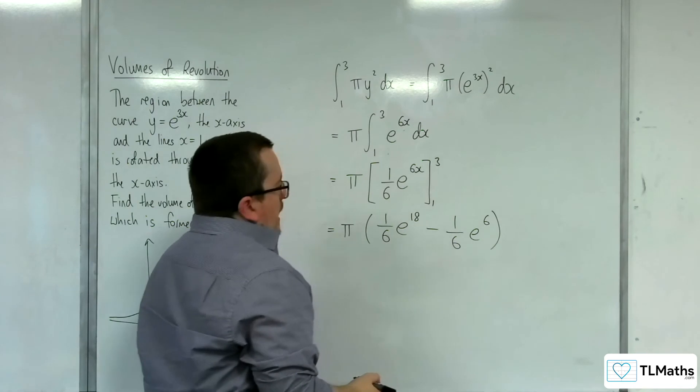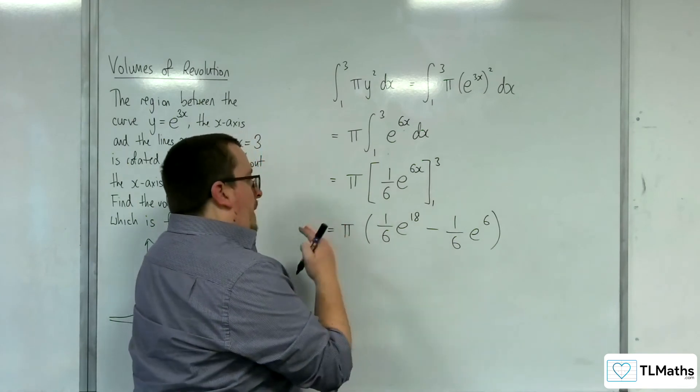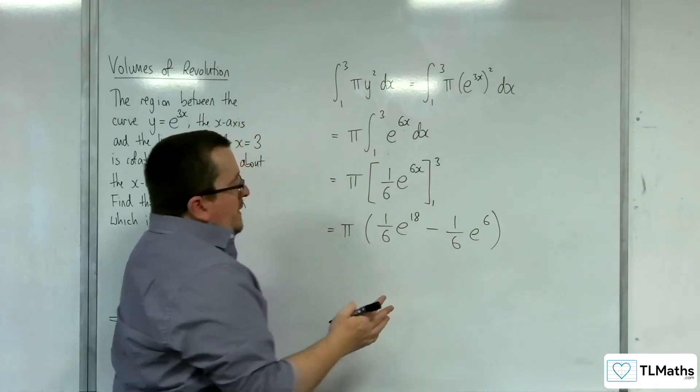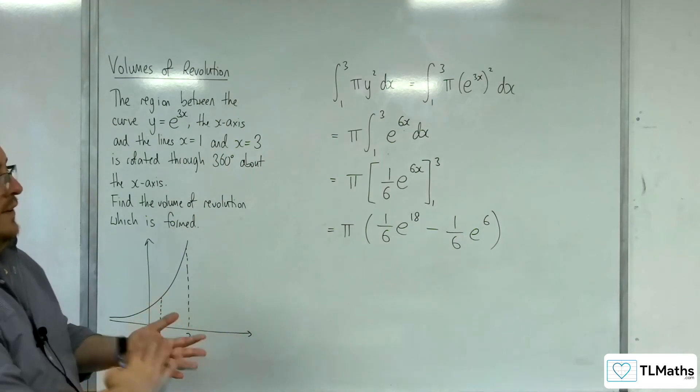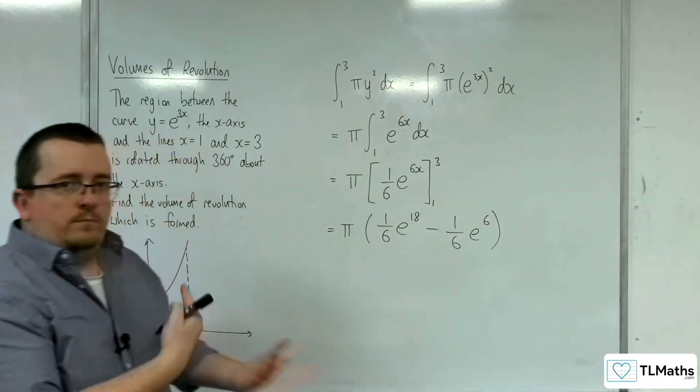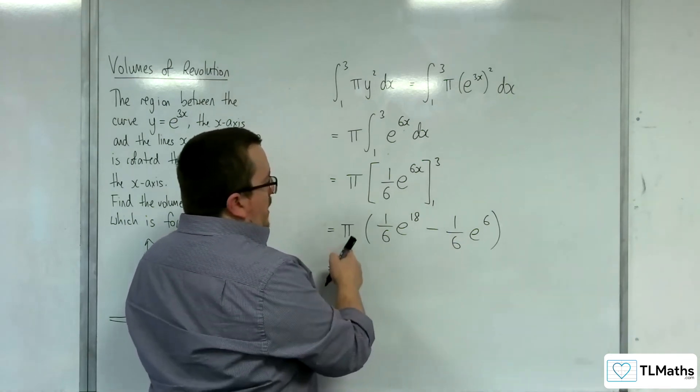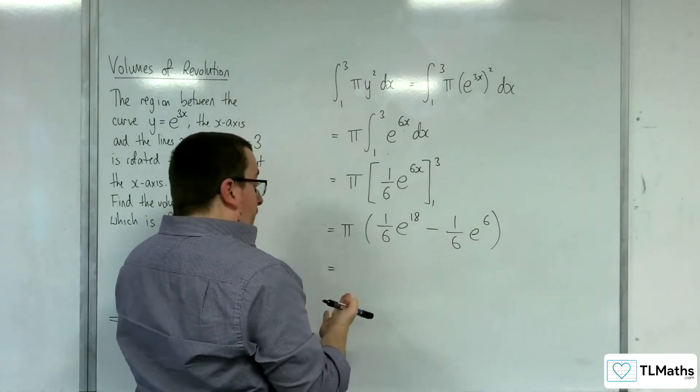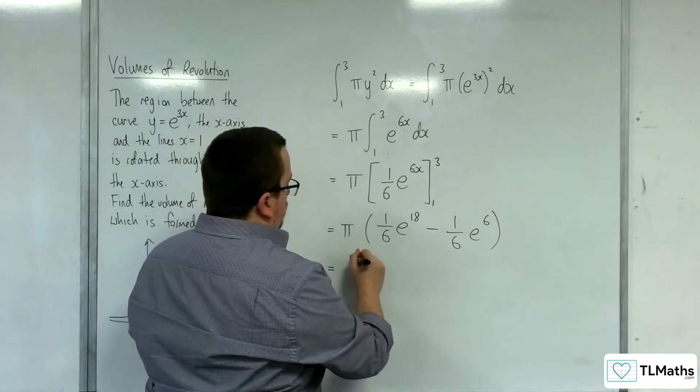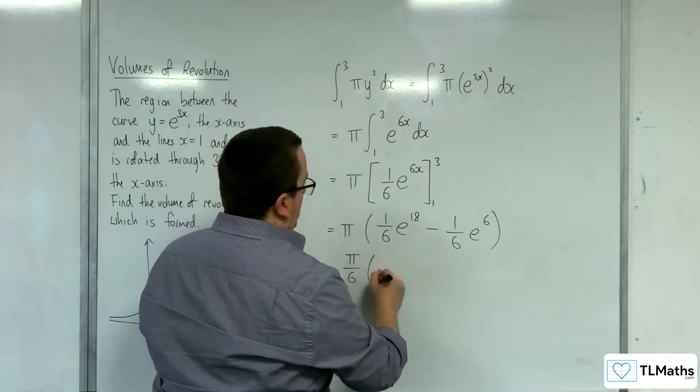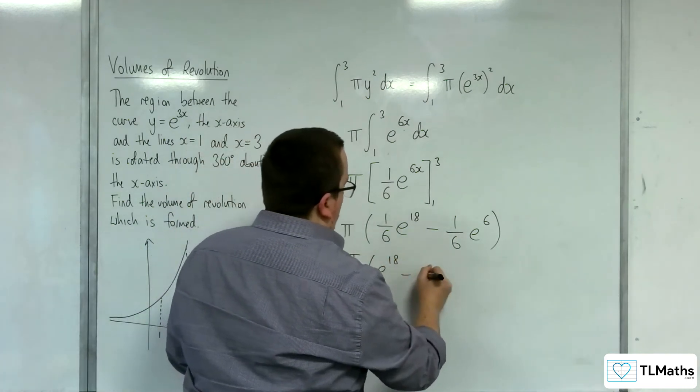OK, so a way to simplify that—there are different ways of writing this, depending on how much you want to factor out. I've got the pi already outside, so it makes sense to bring the one-sixth outside. So you could write that as pi over 6 times e to the 18, take away e to the 6.